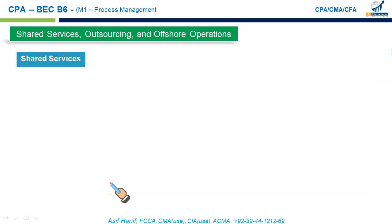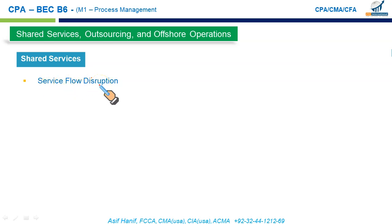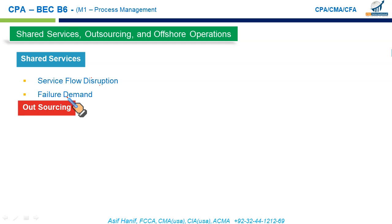Shared services can create efficiencies, but there are certain issues to be aware of. First, service flow disruption — since services are now centralized, it may take longer to deliver a service compared to when it was immediately available within your region. Second, failure demand — a task needs to be performed a second time because it was done incorrectly the first time by the centralized service.